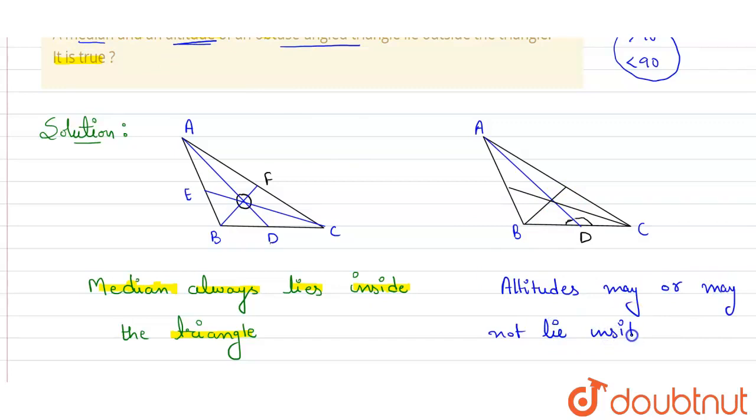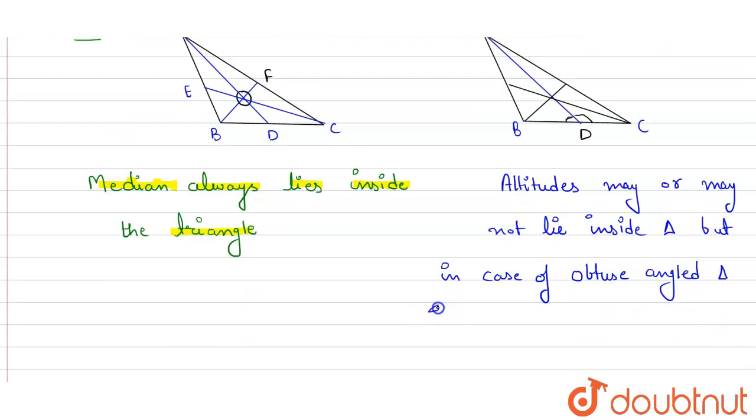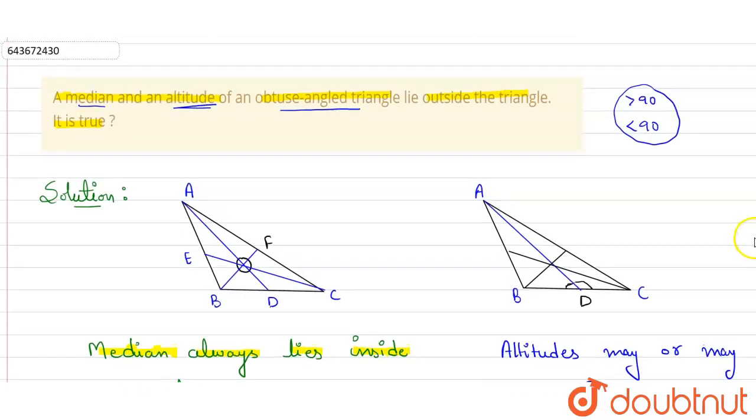But in case of obtuse, it will lie outside the triangle. It will lie outside the triangle, then only it will meet the opposite side at 90 degrees.